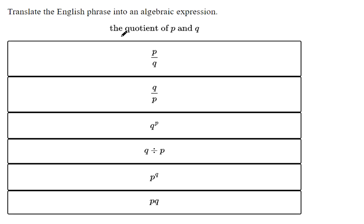Quotient means division. So for the quotient of P and Q, that means we need to take P and divide it by Q.